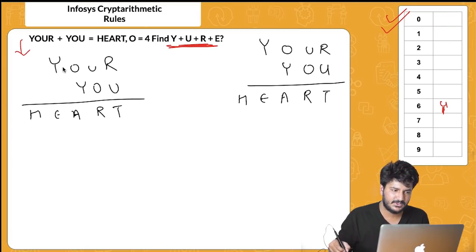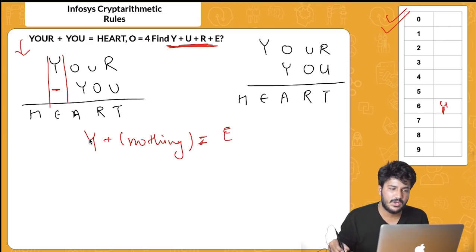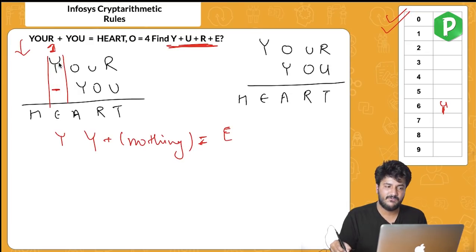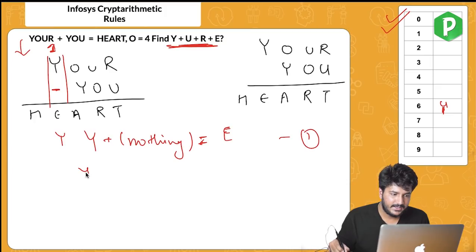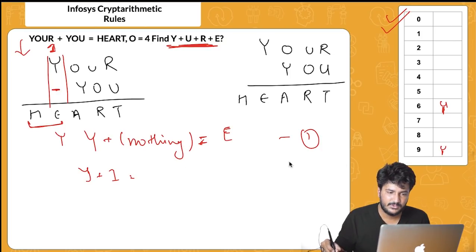In the leftmost column, Y plus nothing should give Y — but E is appearing instead. So there must be a carry coming from the previous column. Since Y plus 1 carry produces a two-digit result (H is generated as an extra digit), Y must equal 9.